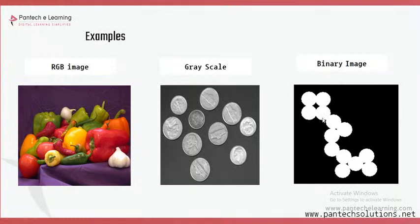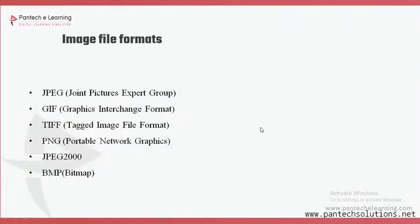Now you get some idea: what is RGB, gray, and binary. Moving on to file formats. In digital image processing, vector and raster are two different categories. For vector: extensions like .PDF, .SVG, and .EPS come under vector format. For raster: JPG, GIF, TIFF, PNG, BMP all come under raster format.